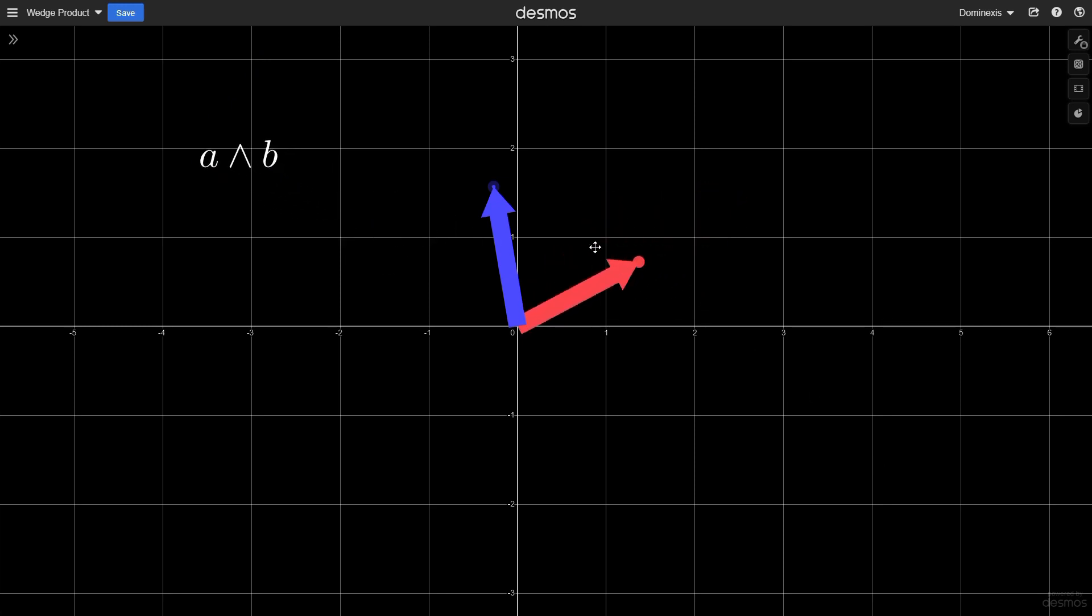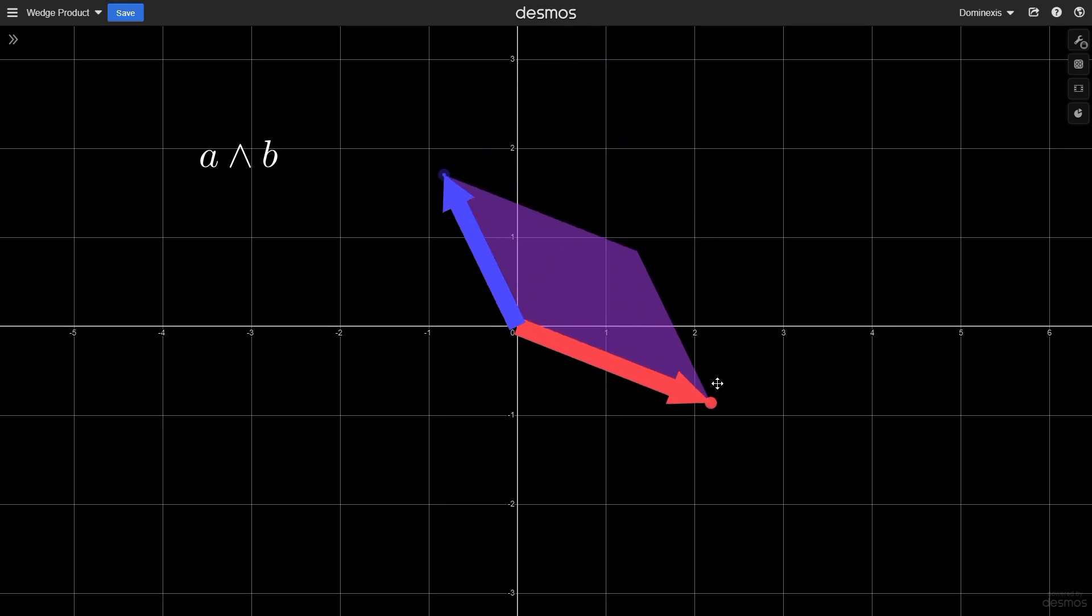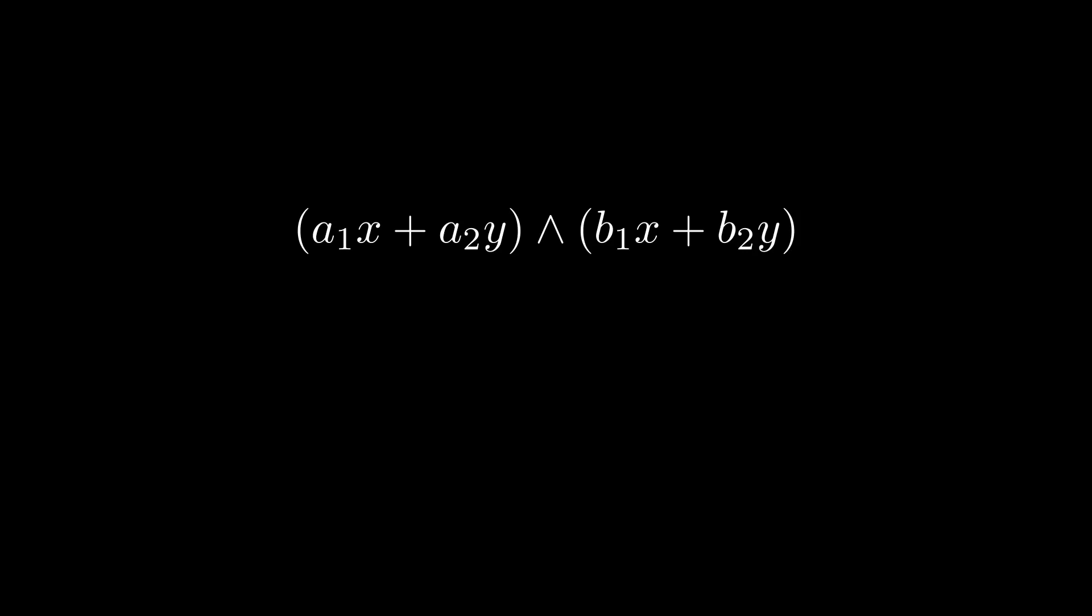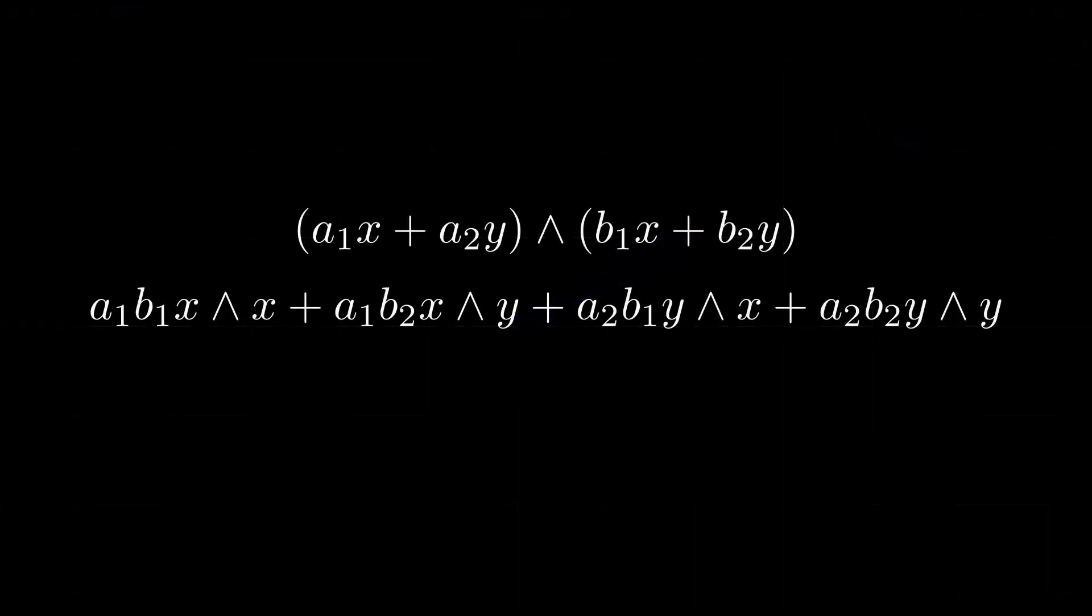Enter bivectors. A bivector is what you get when you take the wedge product of two vectors. It describes not a direction, but the area inscribed by the vectors. Let's take the wedge product of our two vectors and see what we get. We start by substituting the vectors for their component form. Then we distribute the terms. From here, there are two things that we can simplify. First, some of the basis vectors are being wedged with themselves. If you try to describe the area between a vector and itself, there's actually no area at all. So wedging something with itself cancels out to zero.